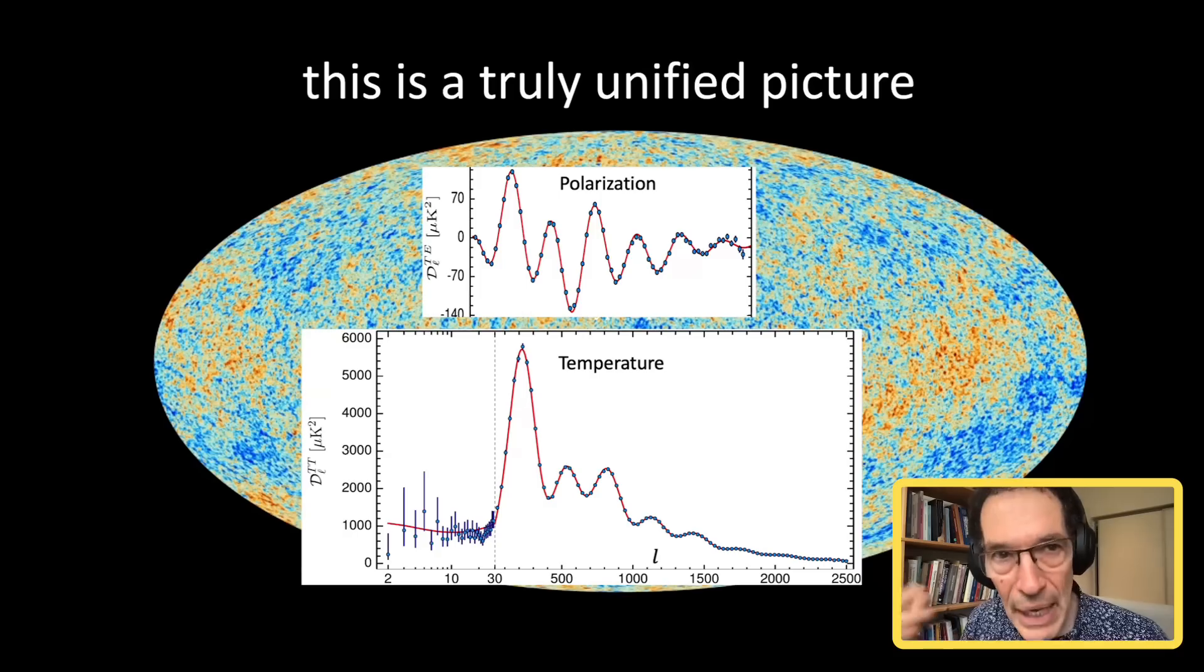If this is true, there are many, many other consequences. It leads to a new picture of black holes, which resolves the black hole information paradox. It will lead to many other predictions, because it's so constrained, this picture. And there's no wiggle room. Either this picture is right or it's wrong.